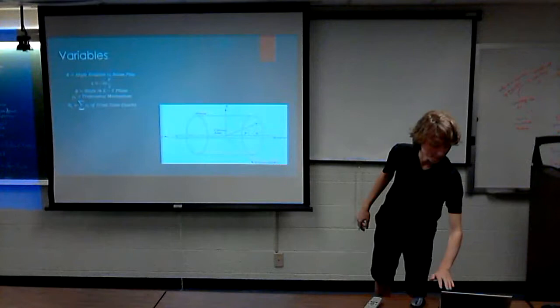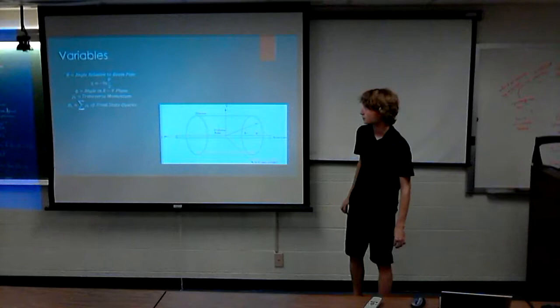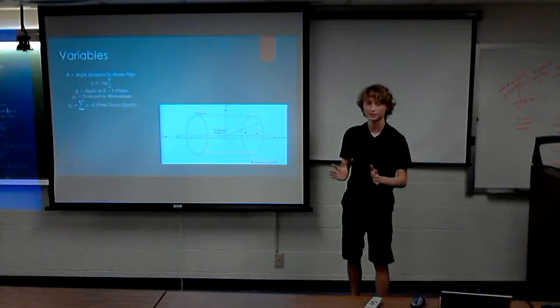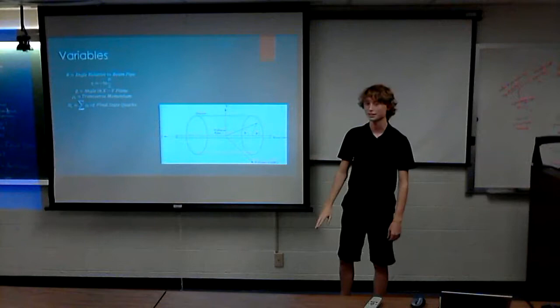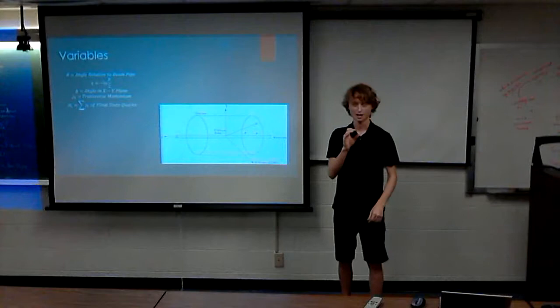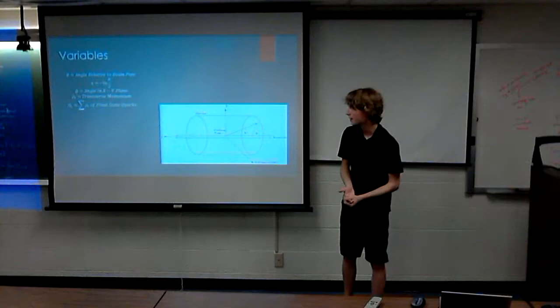So what we were actually looking for in these particles are the various qualities that the particles have. You have theta, which measures the angle with relation to the beam pipe. Eta, which is similar to theta, except straight up is zero, and infinity and negative infinity. We have phi, which is perpendicular to the beam pipe. You have the transverse momentum, which is the square root of the sum of the squares of the momentum in all the directions. And then the HT, which is the sum of the transverse momentum of all the final state quarks.